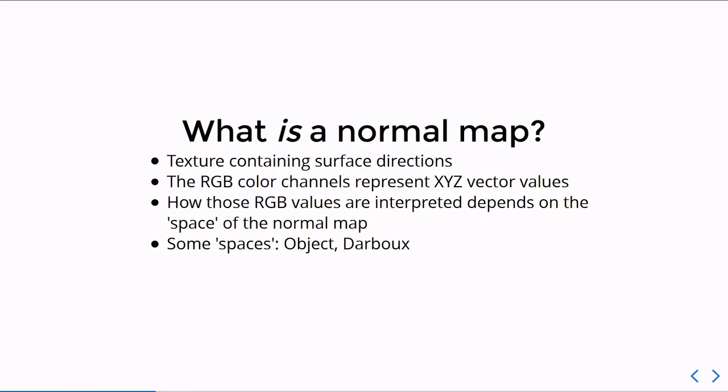What is a normal map? A normal map is a texture that contains normal data rather than it being a color texture or a diffuse color or specular or anything. Instead, all the values in it represent directions, which is the normal direction.